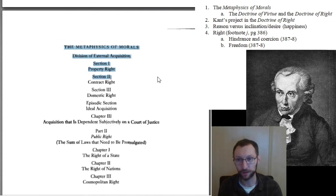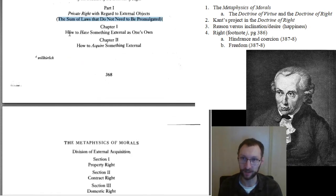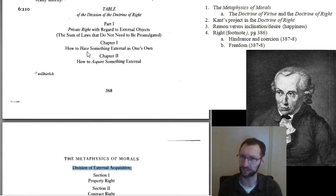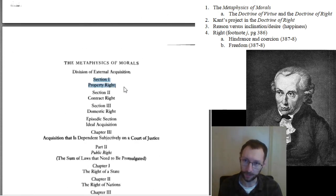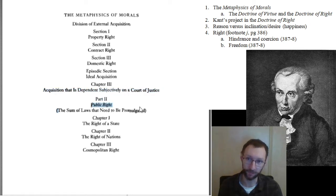There's a division of the Doctrine of Right. Part one is private right — with regard to external objects, the sum of laws that do not need to be promulgated — divided into chapter one, how to have something external as one's own, and how to acquire something external. Then there's the division of external acquisitions: section one, property right; section two, contract right; section three, domestic right; and an episodic section on ideal acquisition. Chapter three covers acquisition dependent subjectively on a court of justice. Then there's part two, public right — the sum of laws that need to be promulgated — covering the right of a state, the right of nations, and cosmopolitan right.